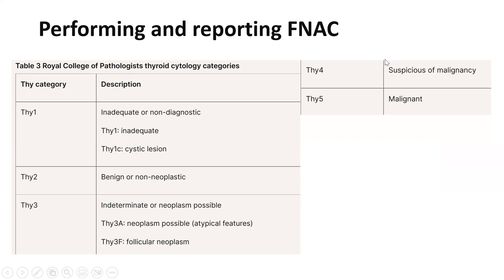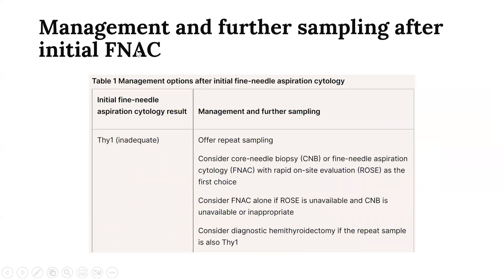Thy4 is suspicious of malignancy and Thy5 is definite malignancy. What should we do after the initial FNAC report as per NICE? If the initial FNAC is Thy1 (inadequate), we should offer repeat sampling — ideally consider core needle biopsy or FNA with rapid on-site evaluation as first choice. Consider FNA alone if rapid on-site evaluation and CNB are unavailable. Consider diagnostic hemithyroidectomy if the repeat sample is also Thy1 — this is a very important statement.